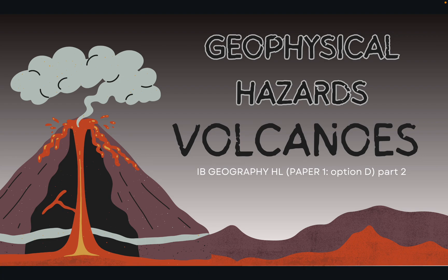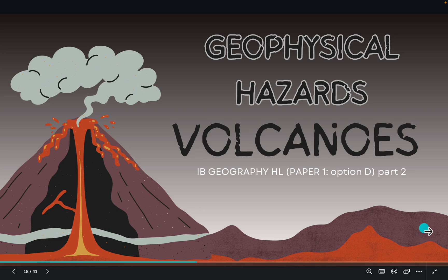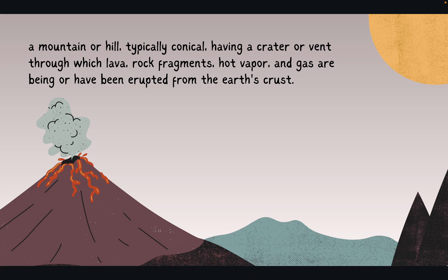Hey guys, welcome back to another Geophysical Hazards IB Geography video. Today I'll be covering volcanoes. So this is the typical definition of a volcano: a mountain or hill, typically conical, having a crater or vent through which lava, rock fragments, hot vapor, and gas are being or have been erupted from the Earth's crust.